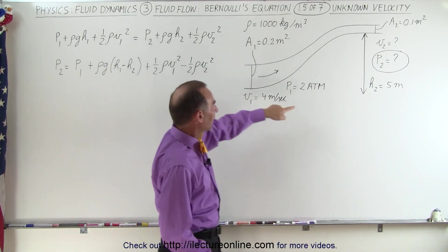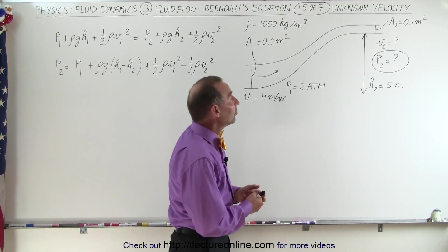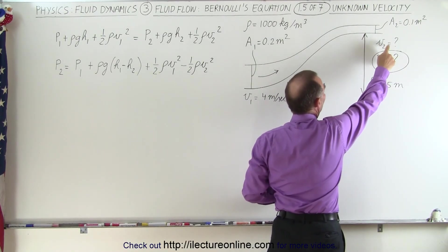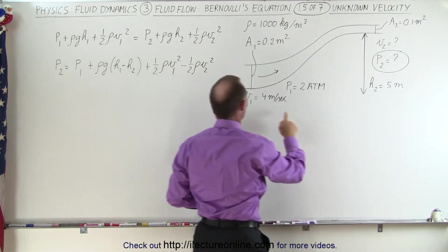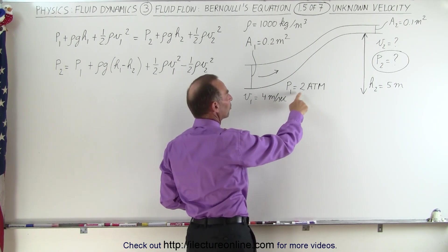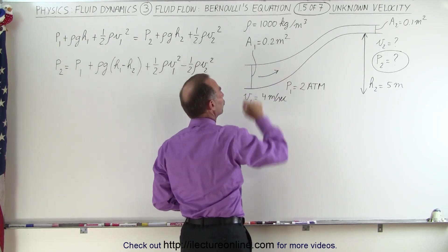Let's call this point 1 and let's call this point 2. The question in the problem is what is the pressure at point 2 and also what is the velocity at point 2, knowing that the velocity at point 1 is 4 meters per second and that the pressure at point 1 is 2 atmospheres.